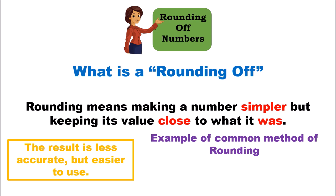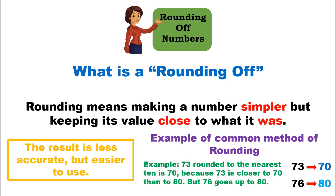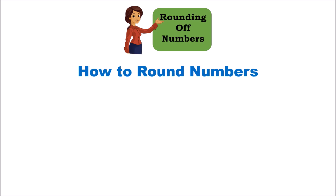There are a number of ways to round off numbers. A common example: if you have the number 73, it rounds to 70 to the nearest 10, because 73 is closer to 70. But if the number is 76, it gets rounded to 80, because 76 is closer to 80 than it is to 70.